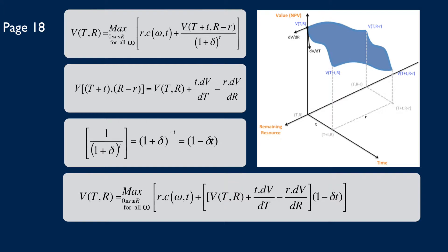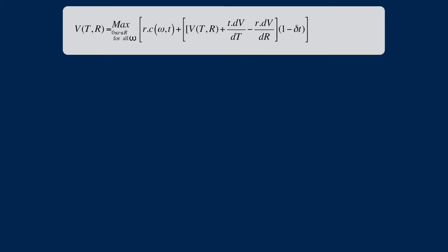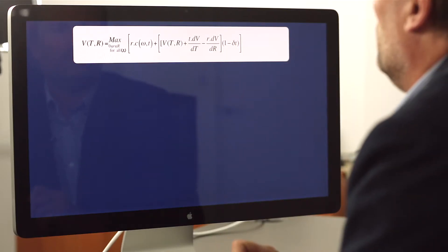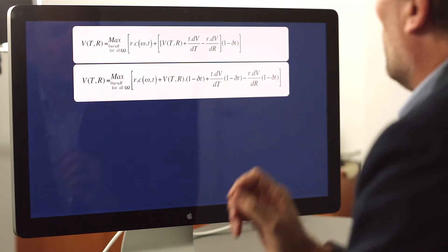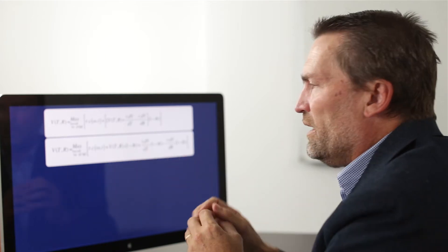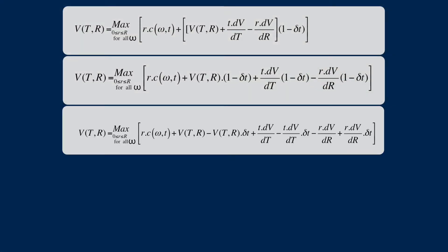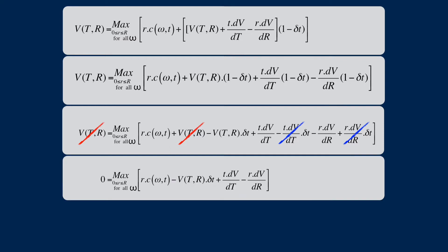If we take that formula and multiply out the discounting term through to the other parts of the brackets, we expand it accordingly. The next step is to expand the next bracket as well. We can then start simplification: since the value at point t, r appears on both sides of the equation we can remove it. We also assume that small time multiplied by small resource is a very small number and can be discarded. After removing these two terms, we end up with a simplified equation.